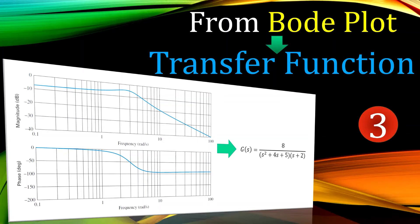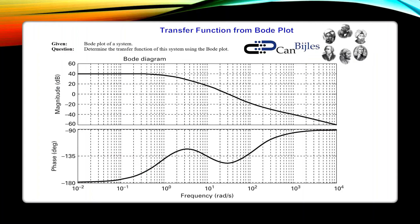Hi everyone and welcome to a new video about control systems topics. We continue with the determination of a transfer function from a given Bode plot or Bode diagram, and this is our example number three. We have the Bode diagram given of a system showing both magnitude and phase, and we would like to determine the transfer function of the system using the Bode plot.